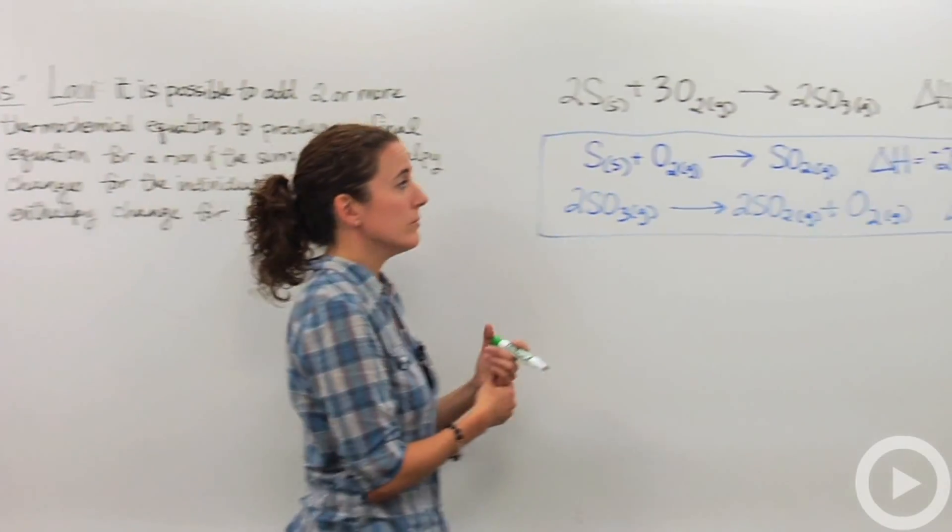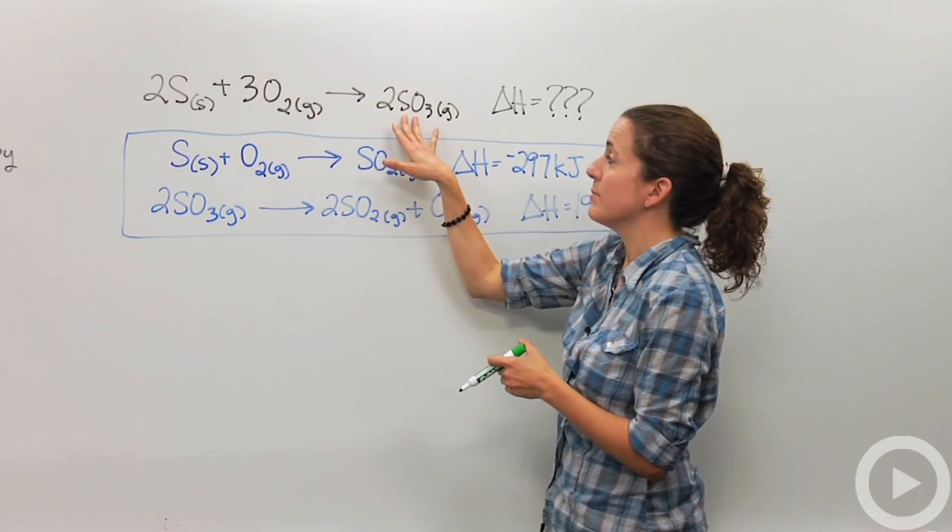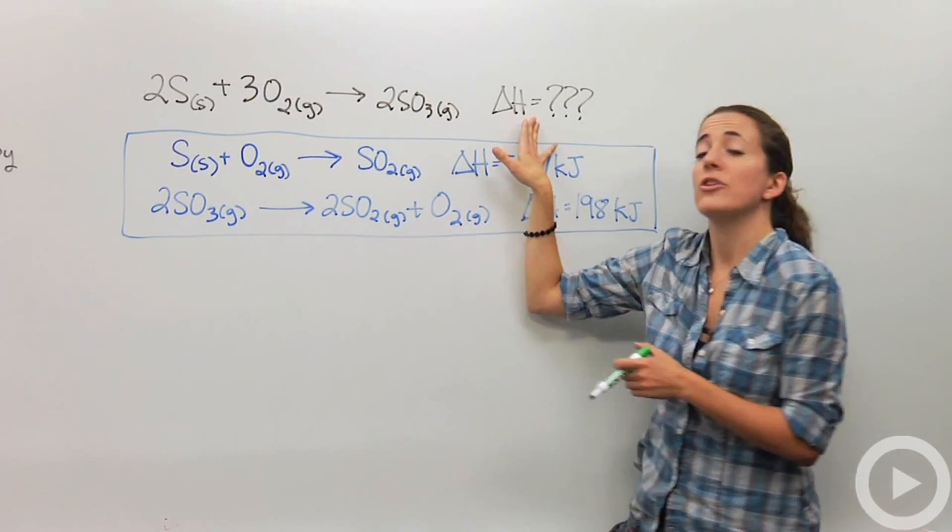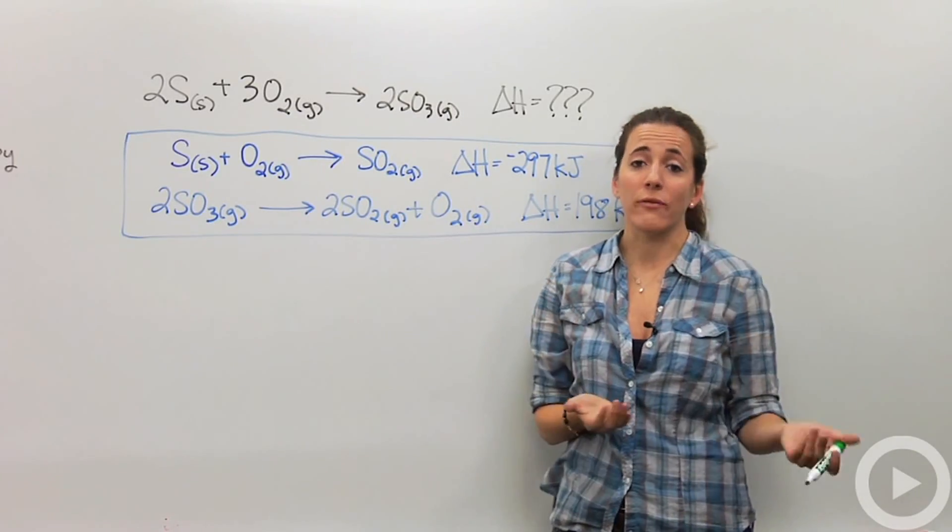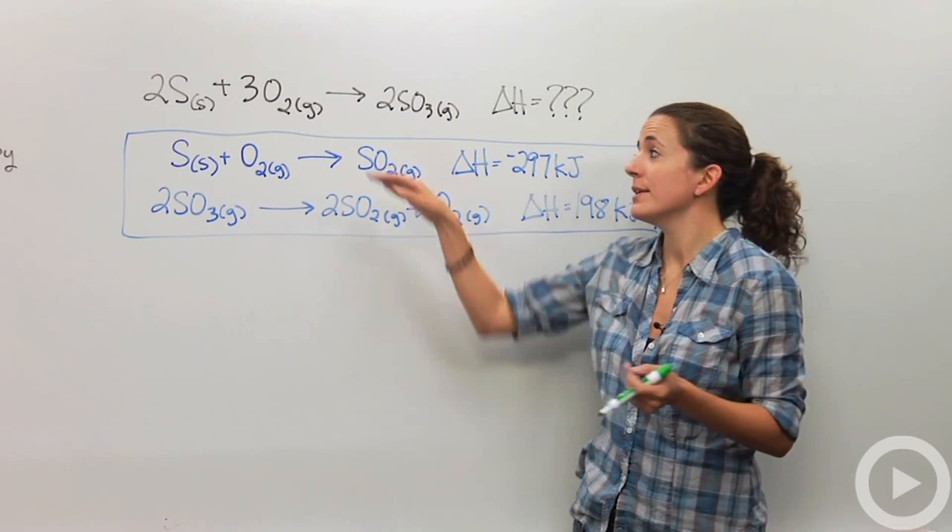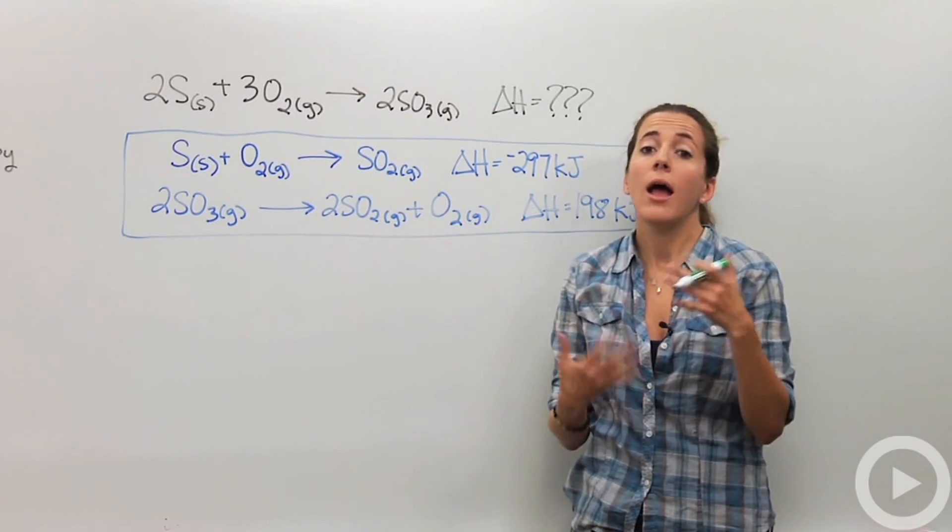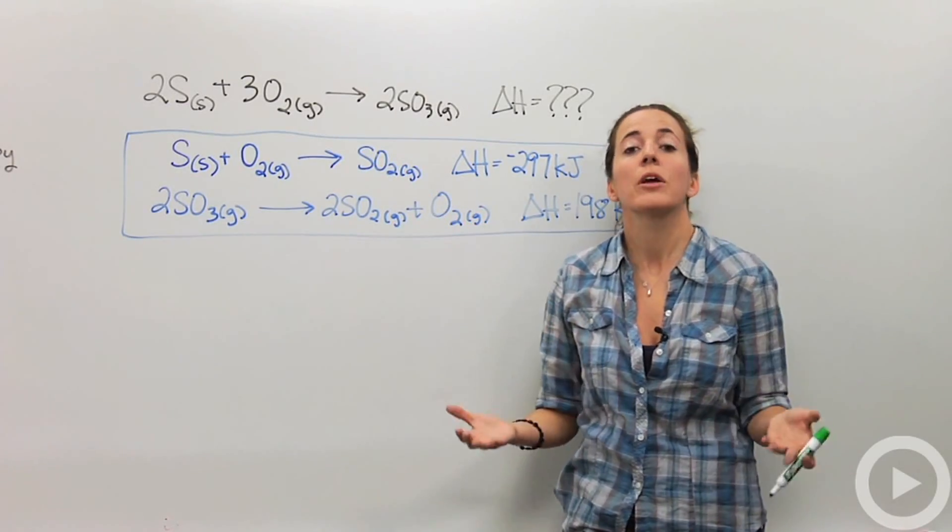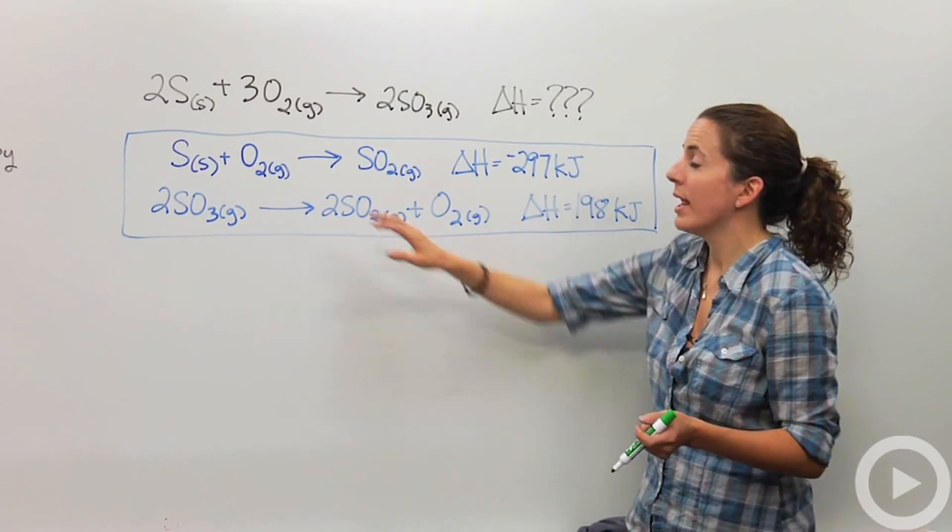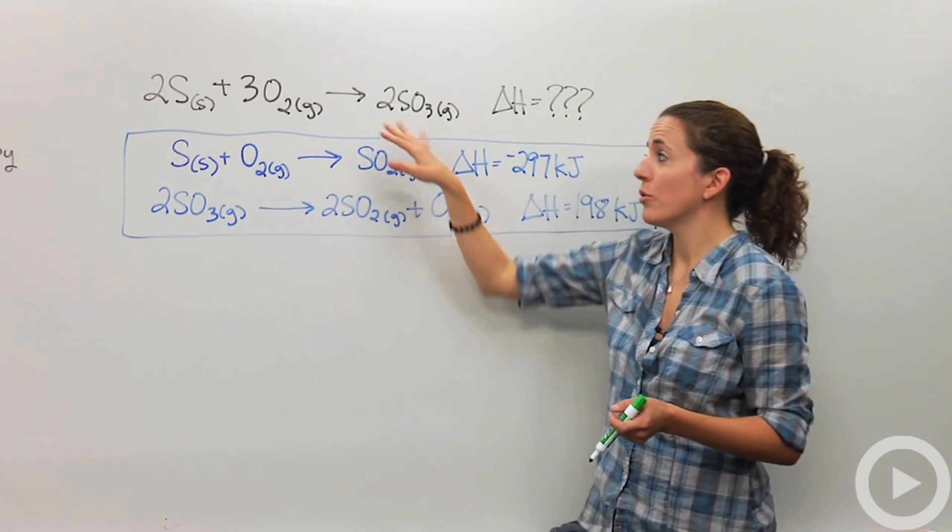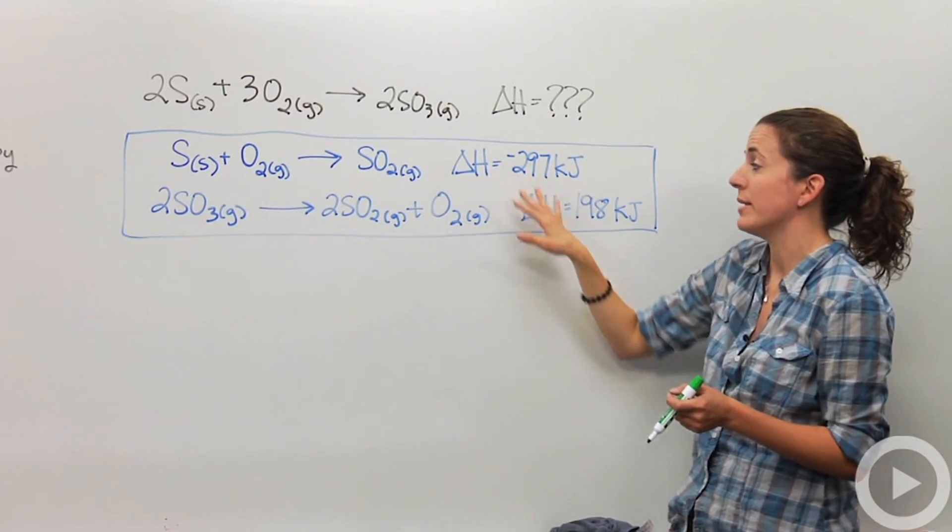So let's actually go over here and let's say I have this reaction. Sulfur plus oxygen gas yields me sulfur trioxide and I have no idea what the delta H is. Well there are many reference books that tell you what the delta H is for other reactions, but this one for some reason I couldn't find. So how can I find this? Well Hess's law says that I can manipulate these reactions in order to get this overall reaction and that way I can figure out my delta H if I add up the two H's.